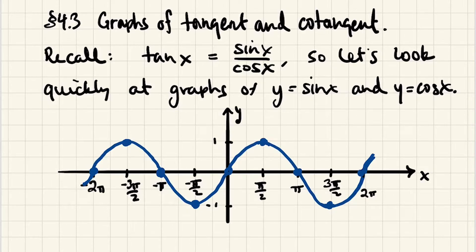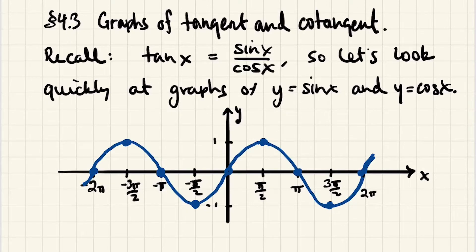Before we get into the graph of tangent, let's note something interesting. The x-axis contains the angles, and the y-axis is the ratios — meaning the sine of those angles. From 0 to π over 2, these angles represent first quadrant angles on the unit circle. Sine values are positive in the first quadrant, so we have our graph above the x-axis.